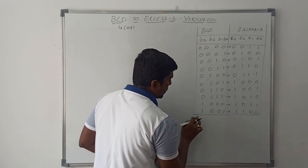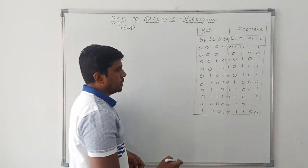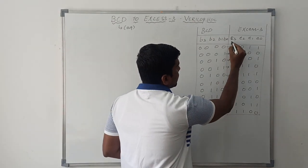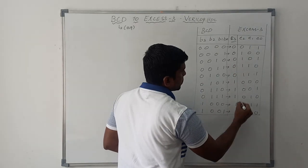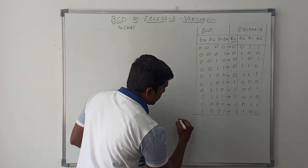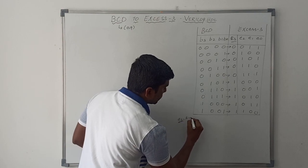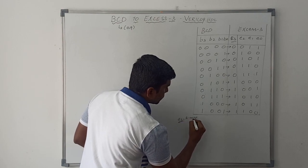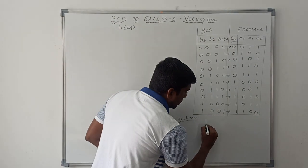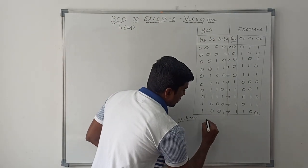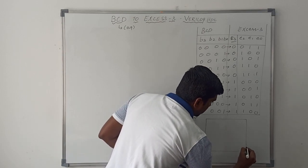Now I am going to find the boolean expression for this XS3. Let me consider E3. I will find the boolean expression for E3 using K-map. It is a 4-variable K-map, so I need 16 cells.